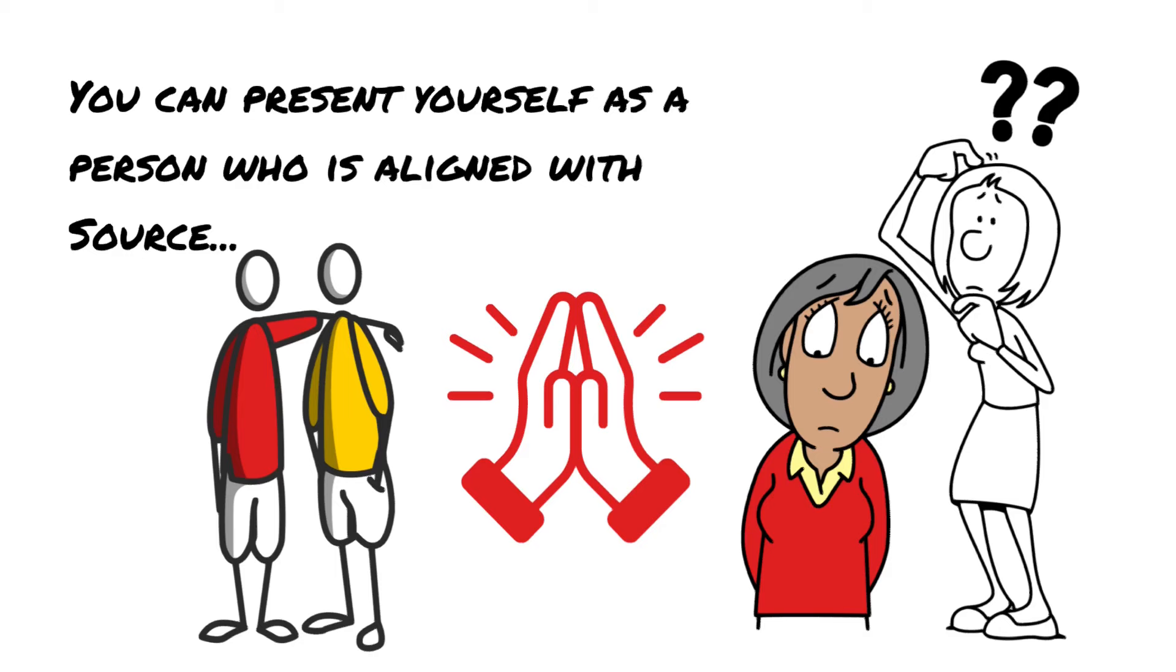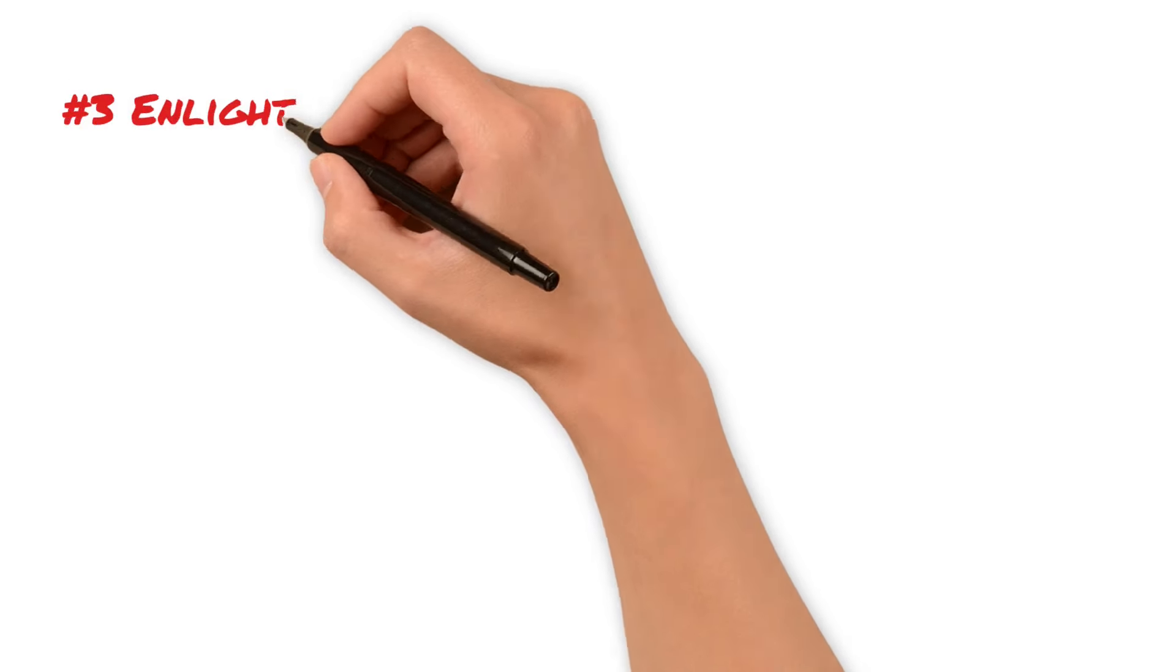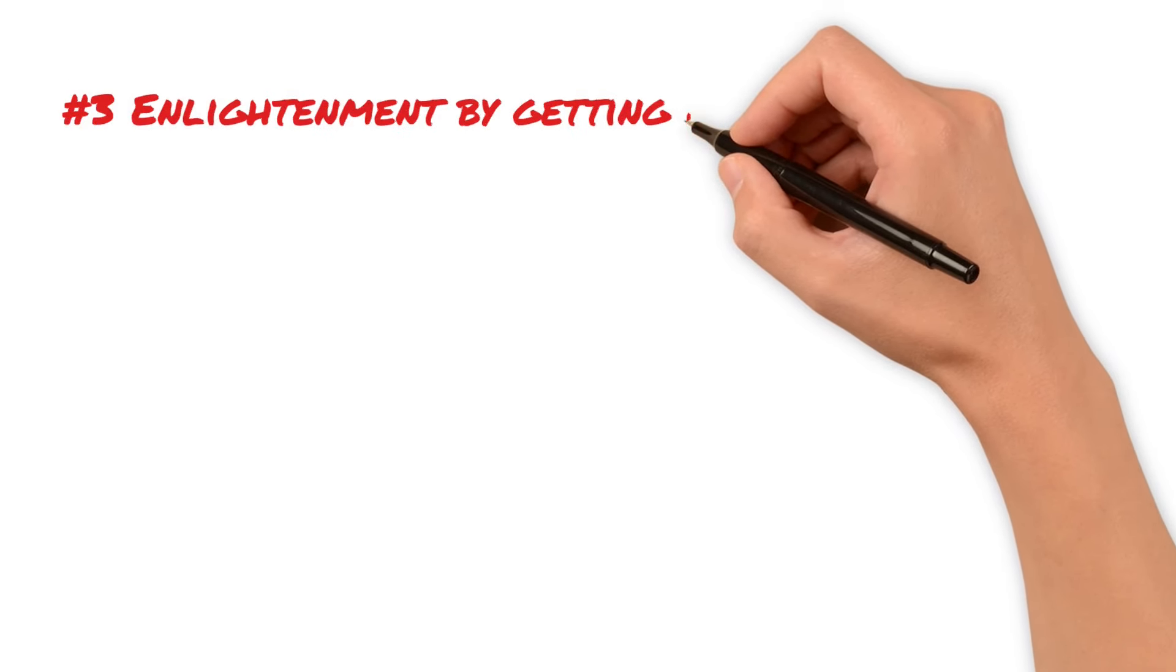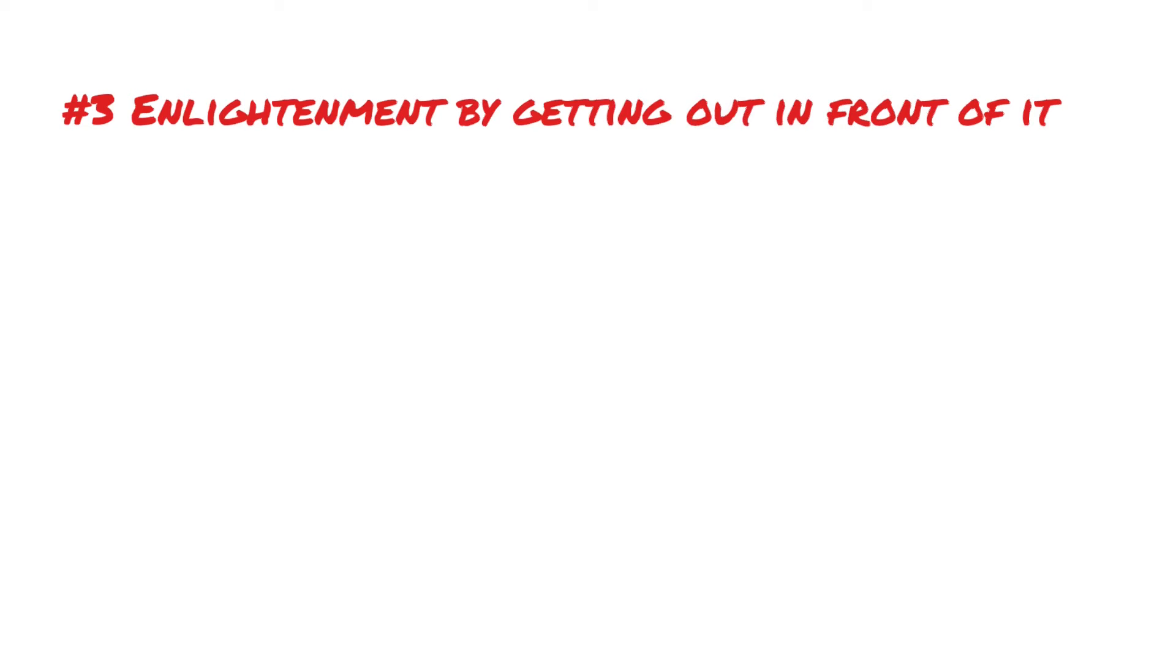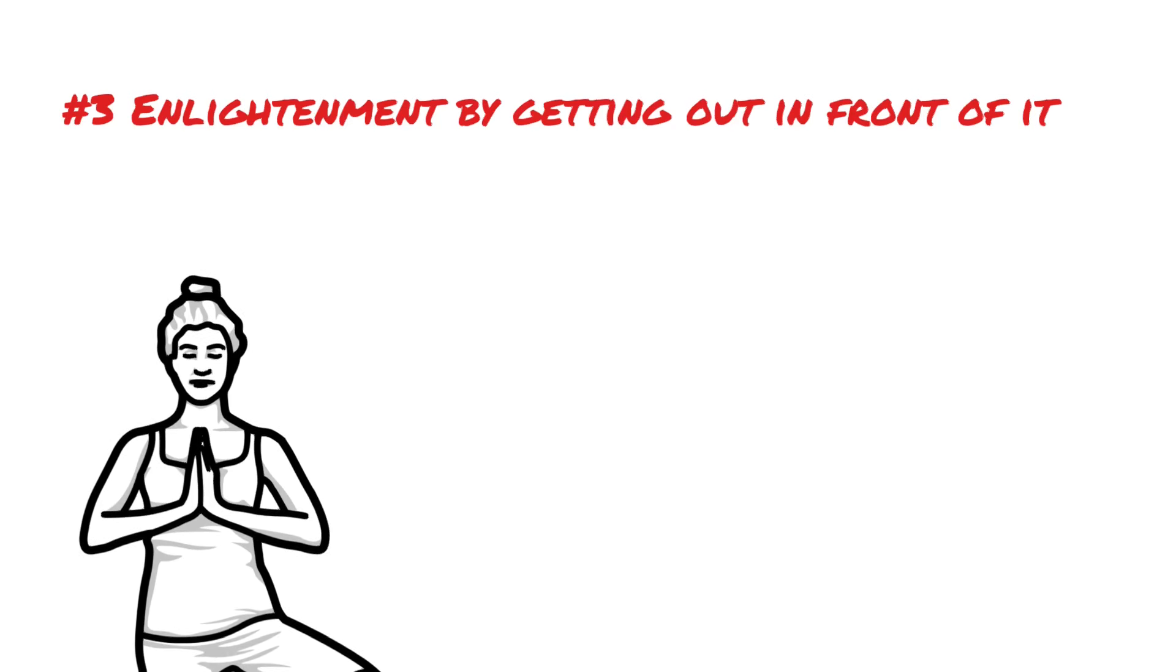The third way to enlightenment is what I call enlightenment by getting out in front of it and stopping it before it gets to you, anticipating it.